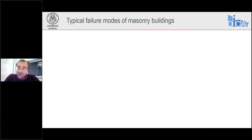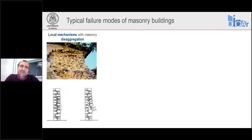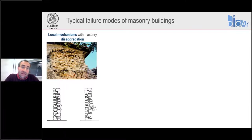Let's recall very quickly how a masonry building may fail — the main failure modes for this kind of building. First, the problem is the quality of the masonry. If the masonry is really poor in terms of mortar strength, blocks, stones, shape of the blocks and their interconnection, we may have failure of the material itself.